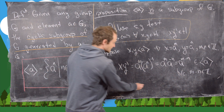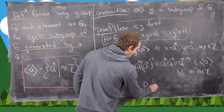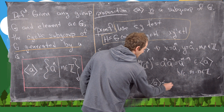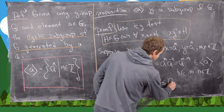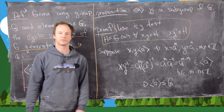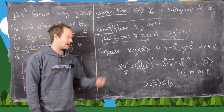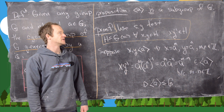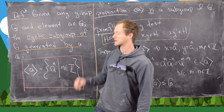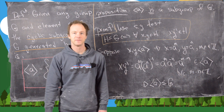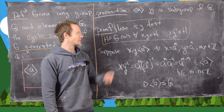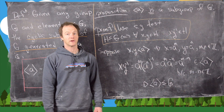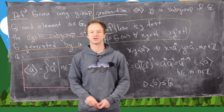This tells us that <a> is a subgroup of g — the cyclic subgroup generated by a is in fact a subgroup, so we are right to call it a cyclic subgroup. Now I'm going to clean up the board and then we're going to prove a related proposition.